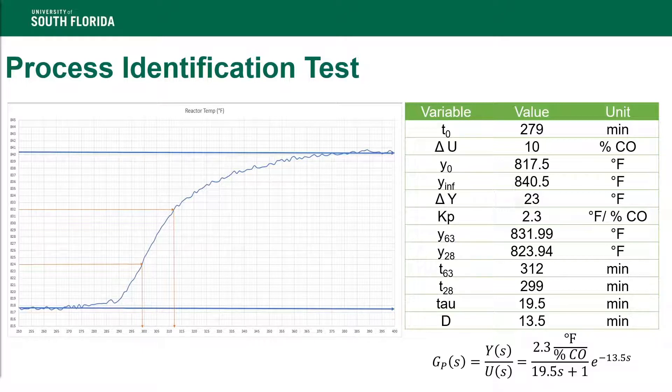From there, we cut the sample down to the window where the ambient temperature fluctuated the least, from time 250 to 400. During this period, we were able to determine the gain of the system, the time constant tau, and the delay using the 63% and 28% response method.